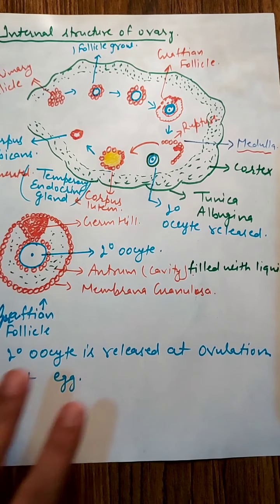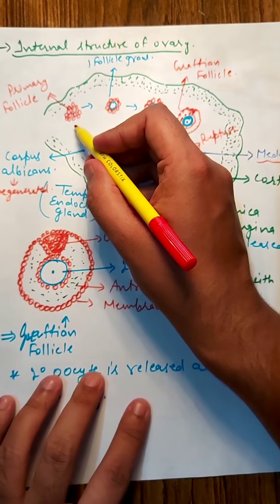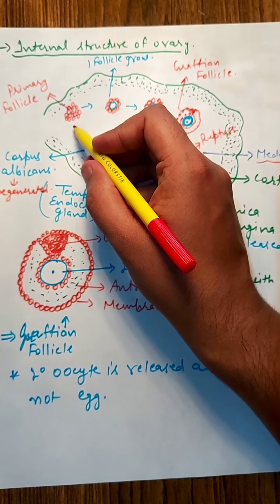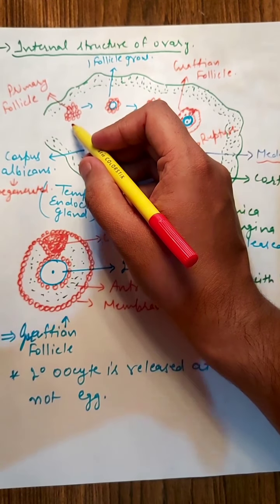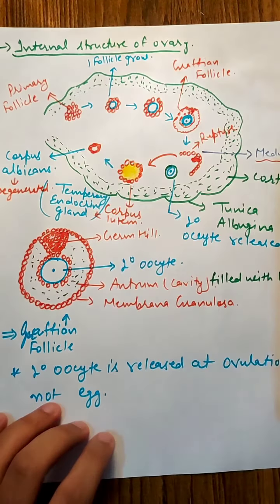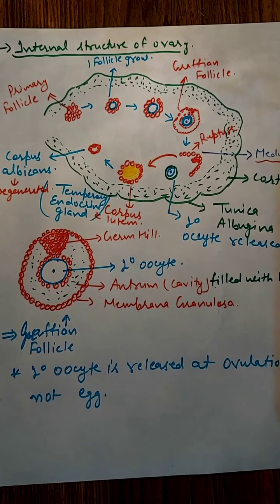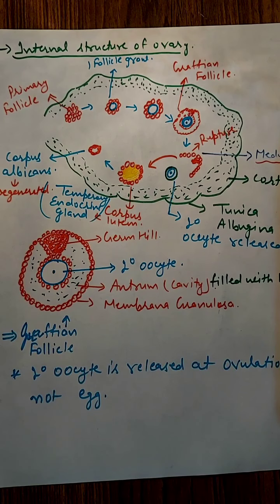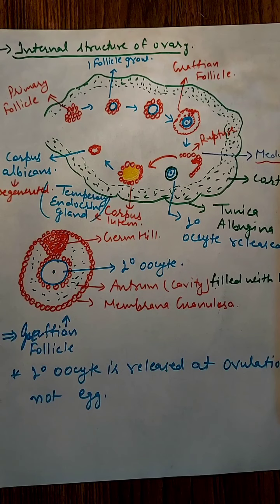The middle or central part of the ovary is known as medulla. This medulla has lots of primary follicles. These follicles undergo structural changes during each menstrual cycle. We will discuss that later. One of the primary follicles will start developing on each menstrual cycle.